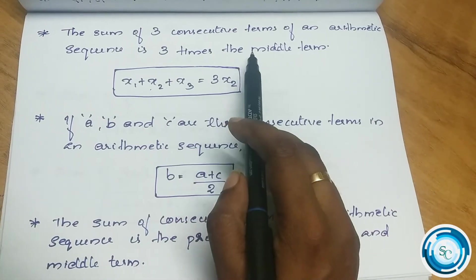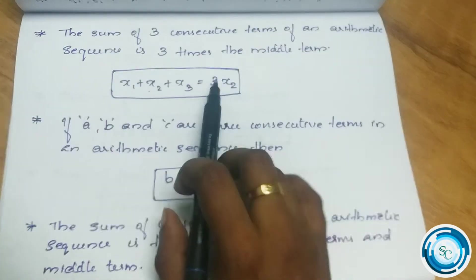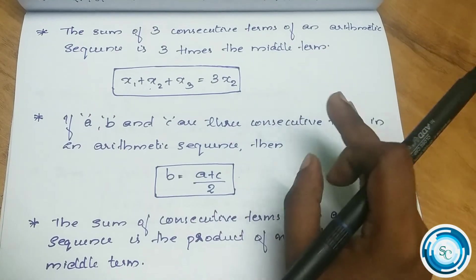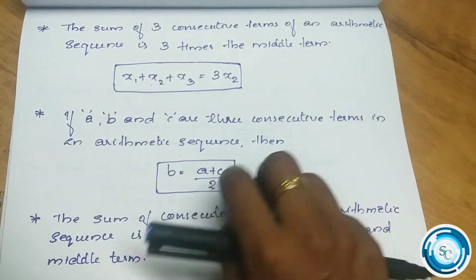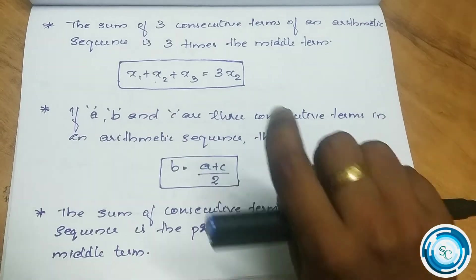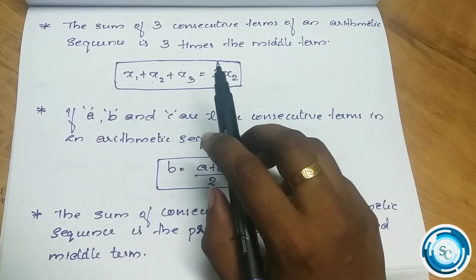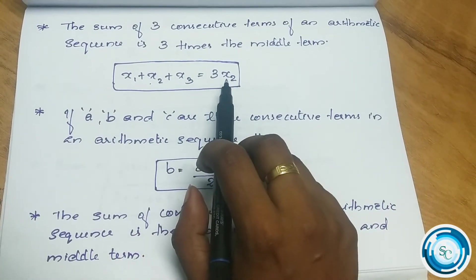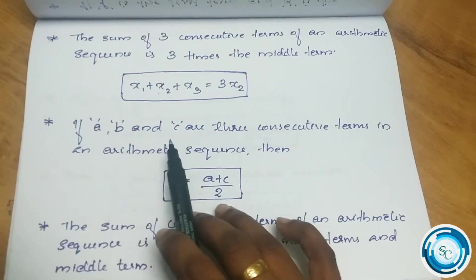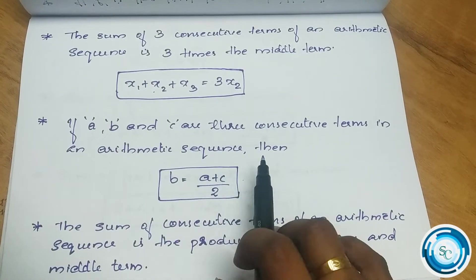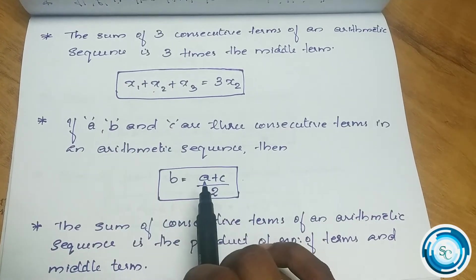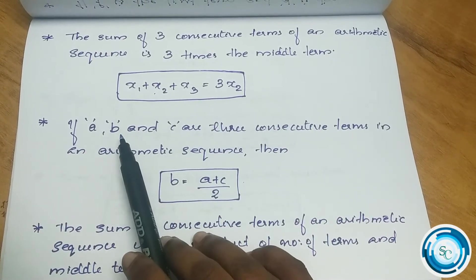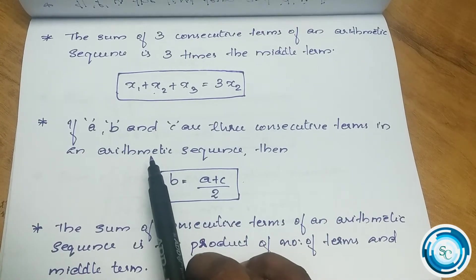The sum of 3 consecutive terms of an arithmetic sequence is 3 times the middle term. That is, x1 plus x2 plus x3 equals 3x2. If a, b, and c are 3 consecutive terms in an arithmetic sequence, then b equals (a plus c) divided by 2. The middle term is half the sum of the first and last terms.